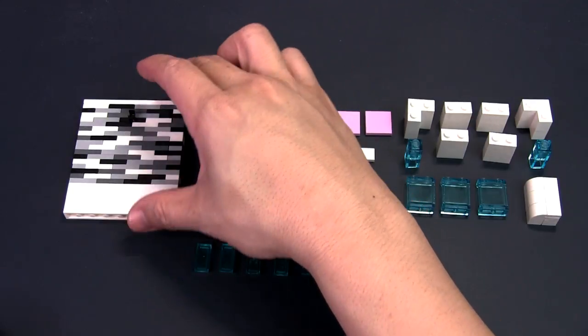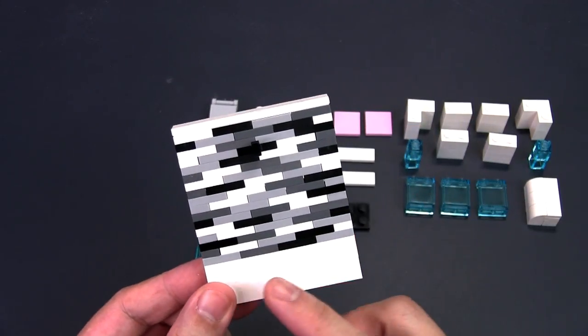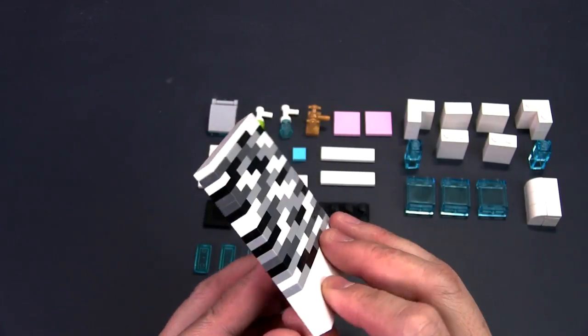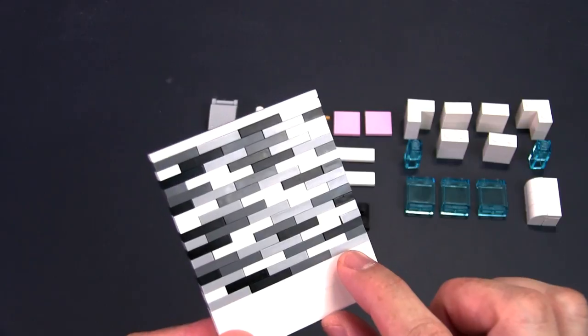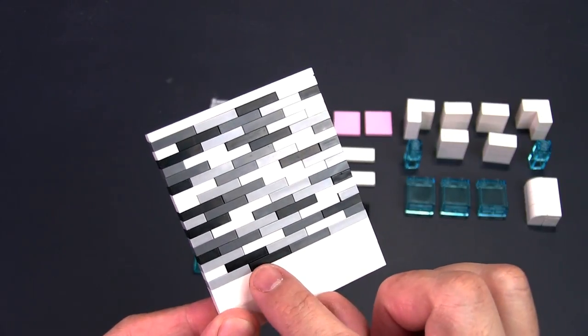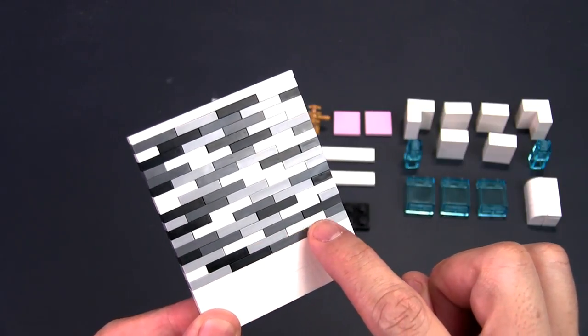For the backsplash wall itself, I won't go into details of how to build it but I will show you an overview. You will need a series of 1x8 bricks for the back of the bathtub and the backsplash wall itself is created using multiple 1x2 plates and 1x1 plates in four colours.